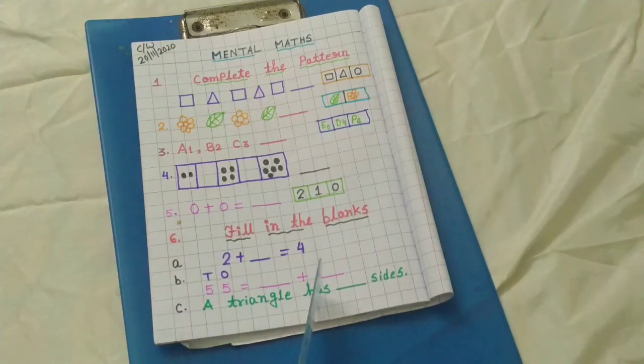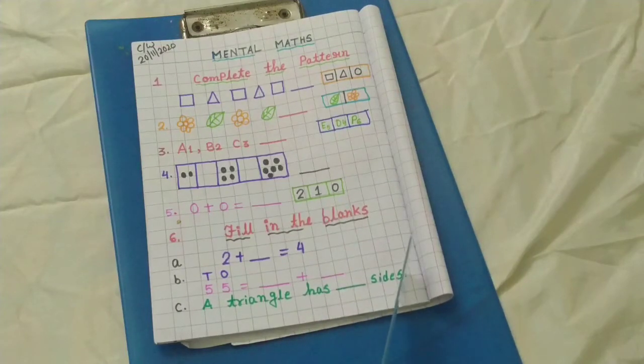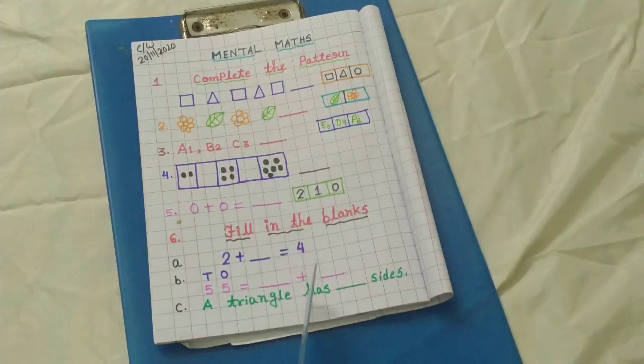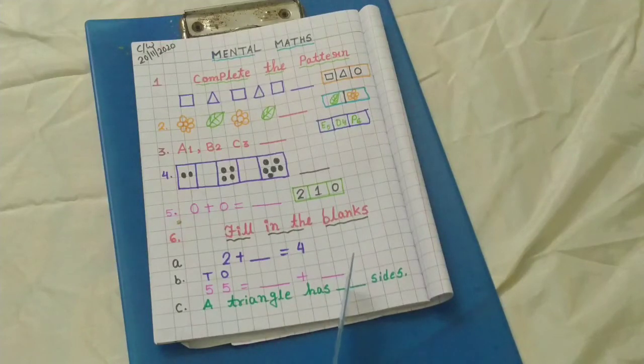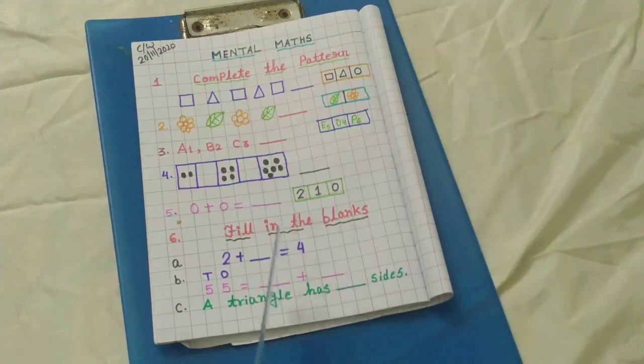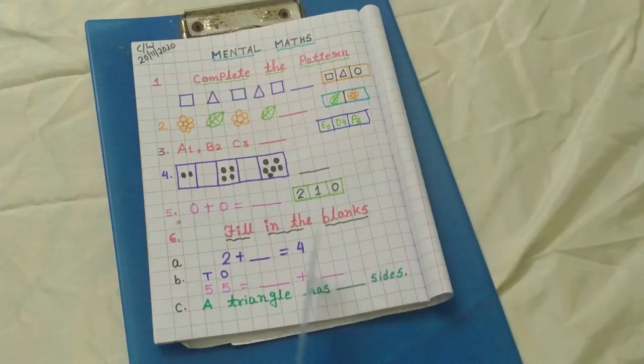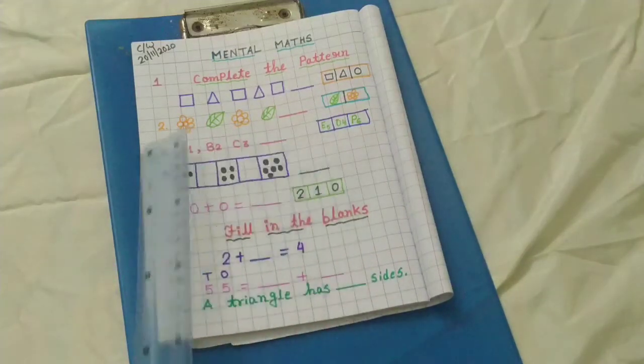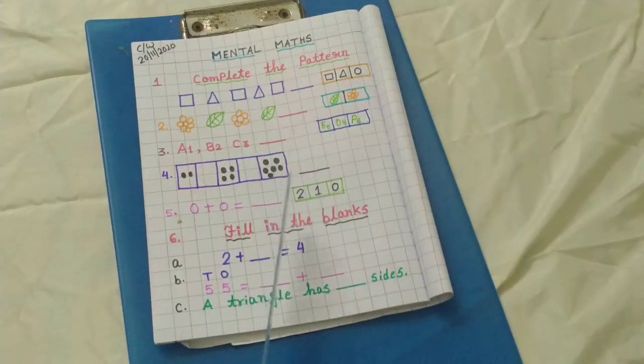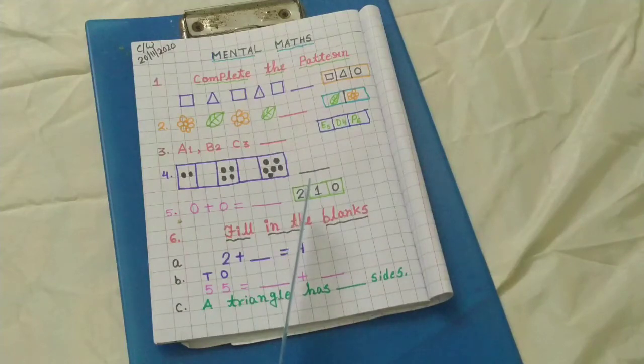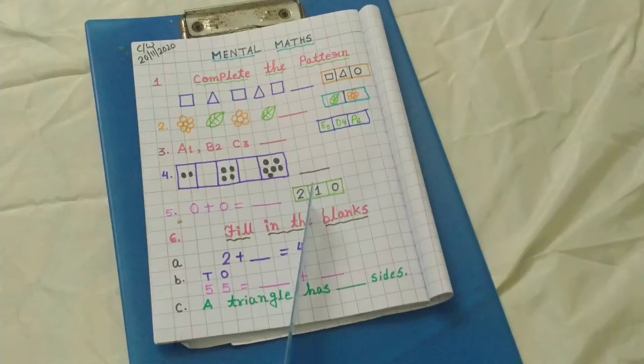Number C. A triangle has dash sides. So a triangle has how many sides? You have to write your answer here. And I hope you all have enjoyed this mental math session, and again I will come with another session.